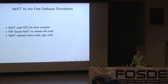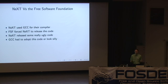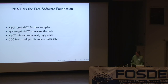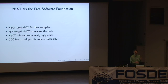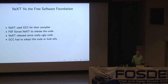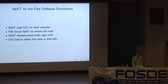The Free Software Foundation set their lawyers on NeXT and said, you have to release this code. So NeXT released the code, and it turned out the reason they didn't want to release it was that it was really hideous — they were just too embarrassed to let anyone see it. Unfortunately, the FSF had put so much effort into forcing them to release the code, they couldn't just say they didn't want it after all. It was one single file, about 1,500 lines long, with no separation of concerns and completely unreadable. But because NeXT tried to keep it private, the FSF then did incorporate it.